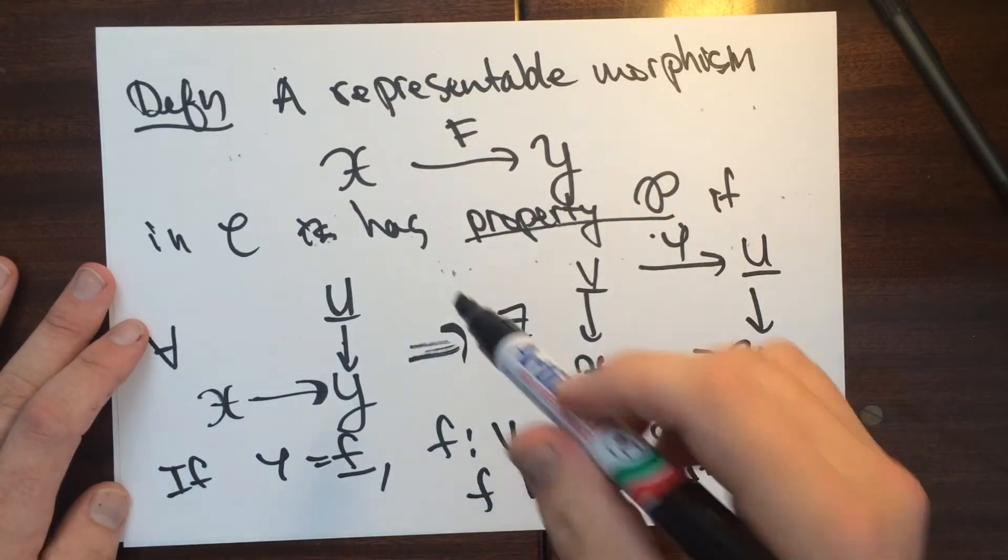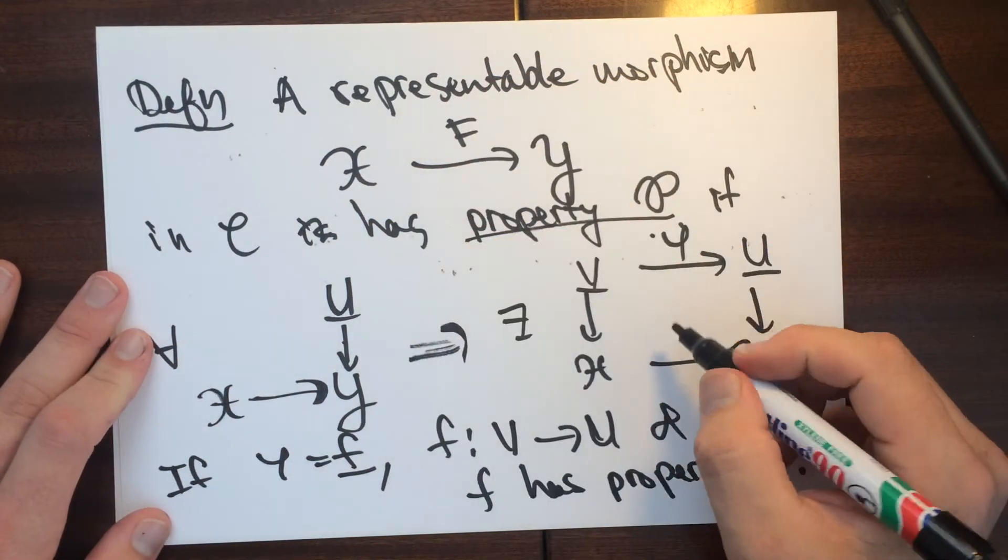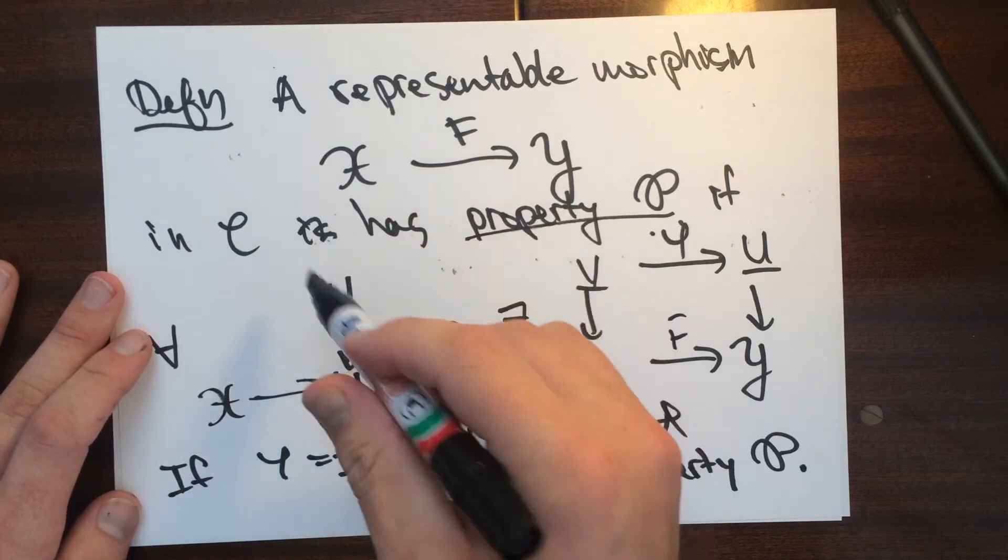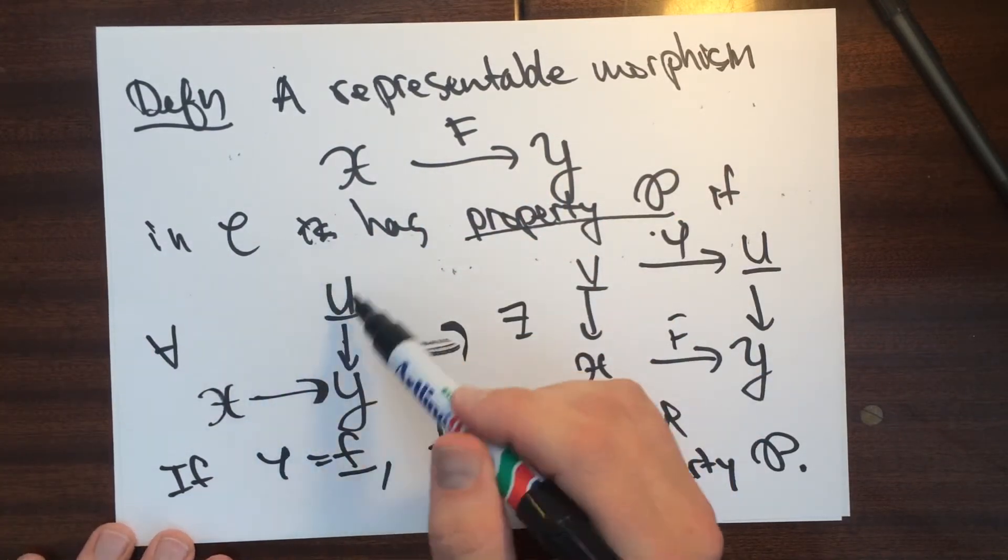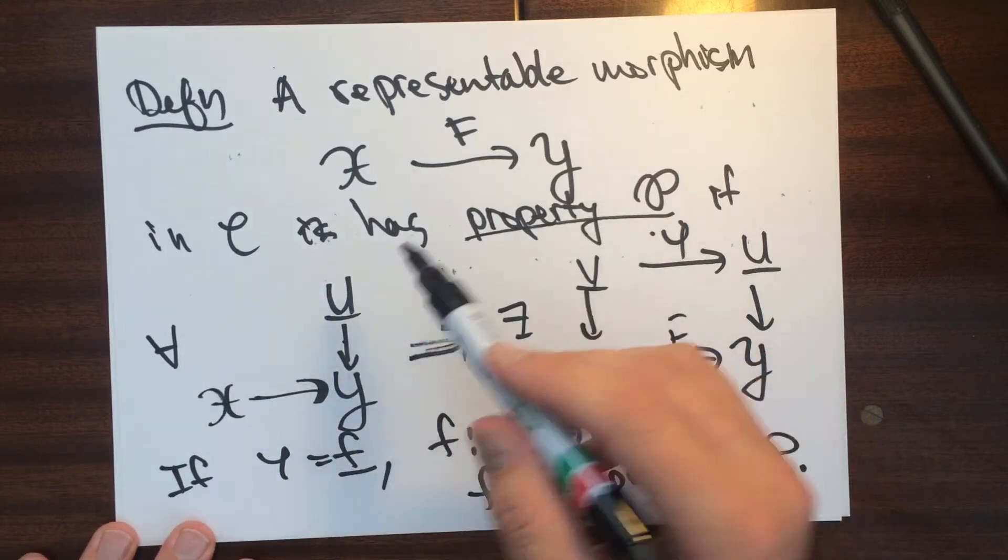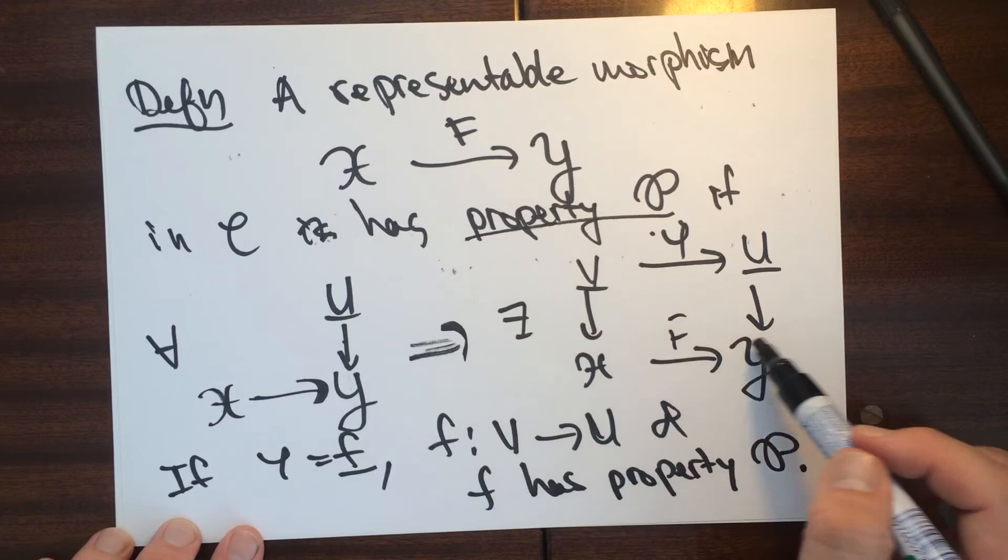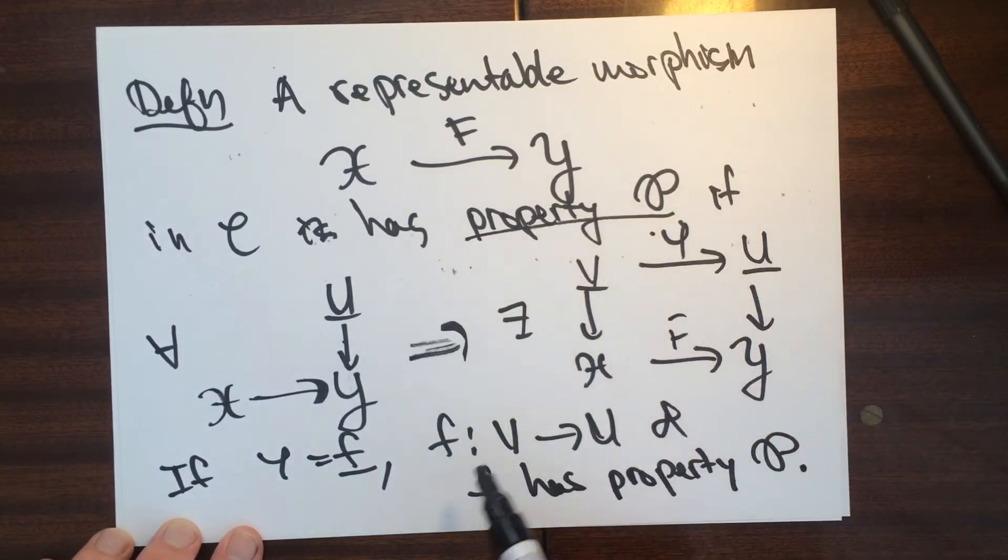So the idea is that we take this map here, and then what we do is we'll look at, since it's representable, we can look at a map from a genuine geometric object, and then we can say that this map has a smooth, say, if this map is induced by a smooth map. That's the idea.